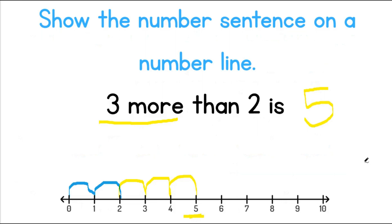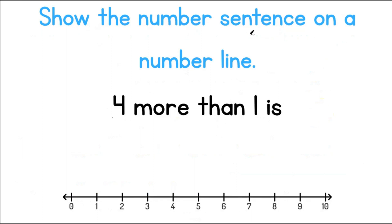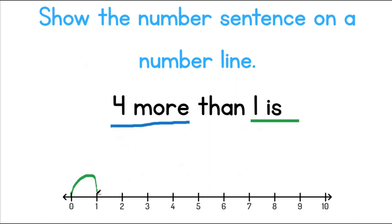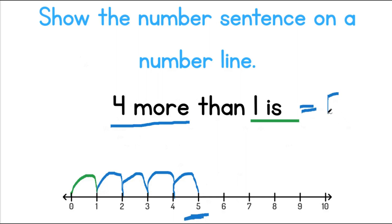Good job, you're getting the hang of it! Let's work out our last example. Show the number sentence on a number line. Here we will start with one, and then we have got to add four more: one, two, three, and four. What is four more than one? Four more than one equals the number five.